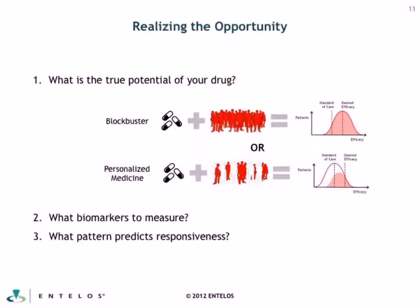How do you realize that opportunity? First, you need to understand what the true potential of your drug is to begin with. If you're developing a drug thinking it's a blockbuster, but it's really only going to work as you want in a subpopulation, you're going to be surprised in clinical trials. The key question is being able to anticipate whether you're heading for a blockbuster reality or something that looks more like personalized medicine. Then you address the standard questions: what biomarkers do you need to measure to identify responders, and what patterns across those biomarkers will actually predict responsiveness?